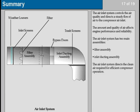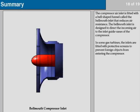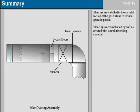The air inlet system directs the clean air required for efficient compressor operation. The compressor air inlet is fitted with a bell-shaped funnel called the bellmouth inlet that reduces air resistance. The bellmouth inlet is designed to direct the incoming air to the inlet guide vanes of the compressor. In some gas turbines, the inlets are fitted with protective screens to prevent foreign objects from entering the compressor. Silencers are installed in the air inlet section of the gas turbine to reduce operating noise, accomplished by baffles covered with sound-absorbing material.